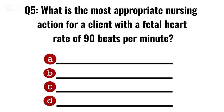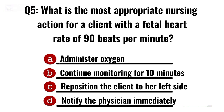Question 5. What is the most appropriate nursing action for a client with a fetal heart rate of 90 beats per minute? Correct option C: Reposition the client to her left side.